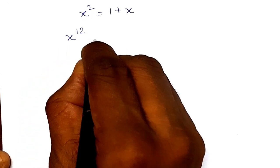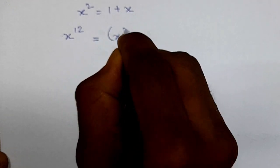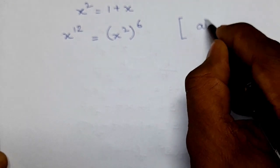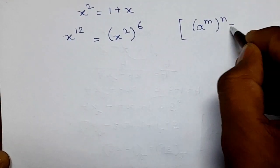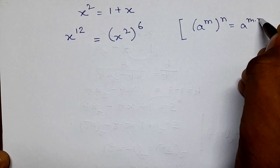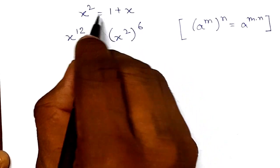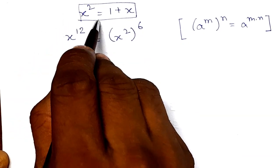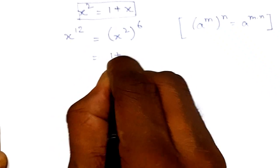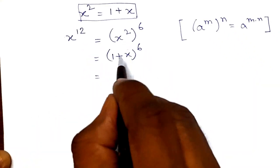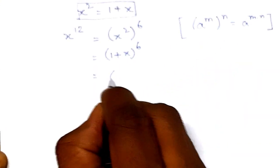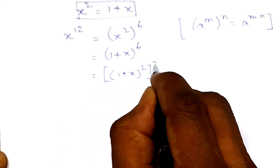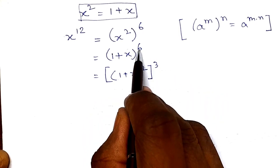We can write x to the power 12 as (x²) to the power 6, because a to the power m, to the power n, equals a to the power m times n. Now substituting x² with 1 plus x, this becomes (1 plus x) to the power 6. Applying the power rule again, we write this as ((1 plus x)²) to the power 3.